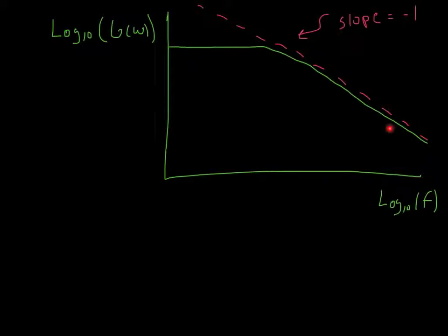And minus 1 in the log scale means that, or even 1 in the log scale means if you multiply your f variable, if you go up in f by times 2, you go down in G of omega by 2. Or if you go up in f by times 10, you go down, and going down means divide by, you go down in G of omega by 10.